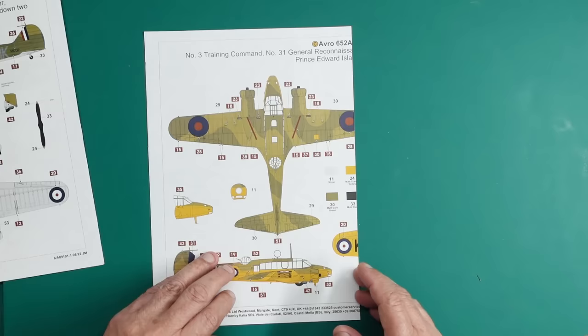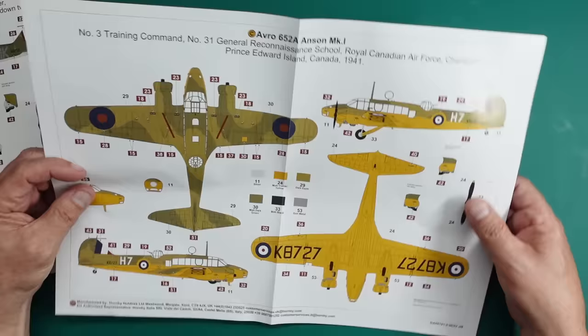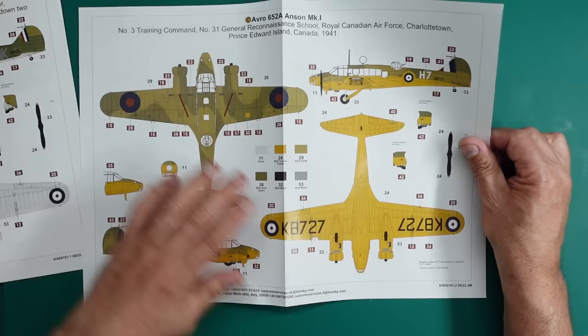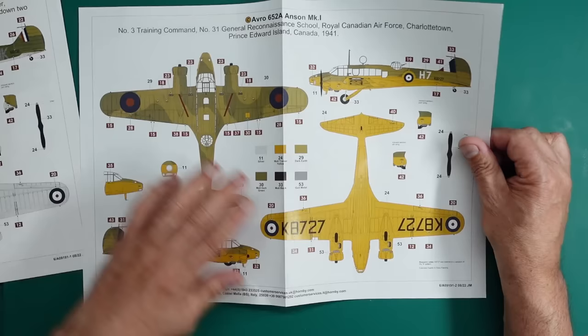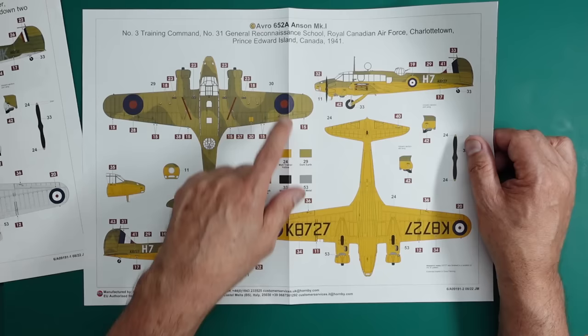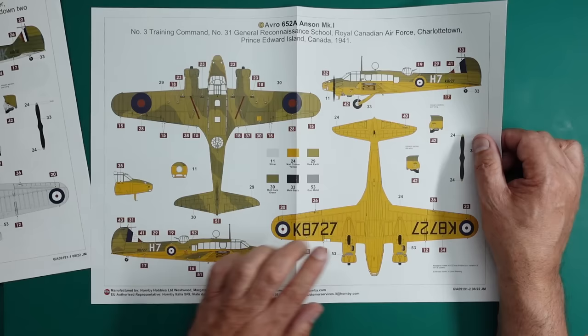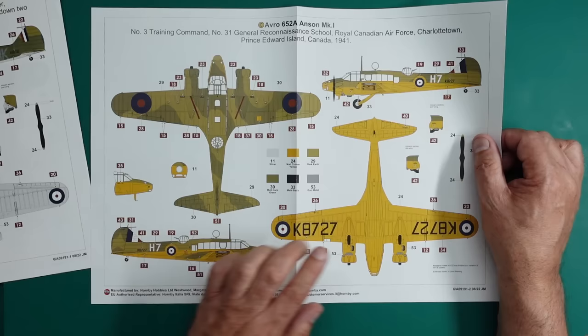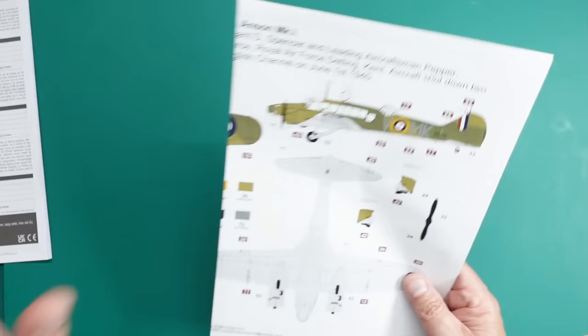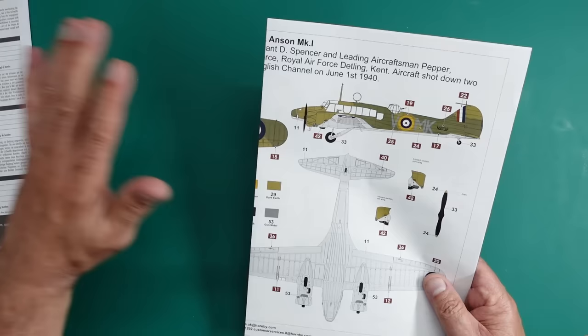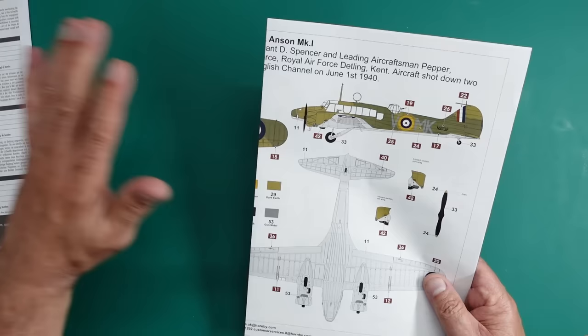And then we've got one here. This one's got the beautiful yellow underneath. That's why it's called trainer yellow, because it's a trainer. And then we've got the dark earth and matte dark green on the upper sides. Very interesting scheme that one, very very pretty. I won't do that one because I don't like that windscreen. So I will probably just do this one, but I'm not going to go aftermarket with decals or anything. Airfix, Cartograph decals, nothing wrong with them at all.